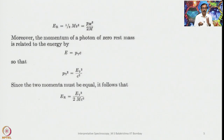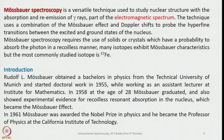This is the background for Mössbauer spectroscopy. Mössbauer spectroscopy is the maiden attempt to see nuclear spin transitions using gamma radiation. It is a versatile technique used to study nuclear structure with absorption and re-emission of gamma rays — part of the electromagnetic spectrum at the high-energy end. The technique uses a combination of the Mössbauer effect and Doppler effect to probe the hyperfine transitions between the excited and ground state of the nucleus.